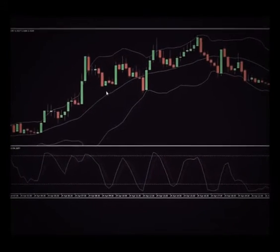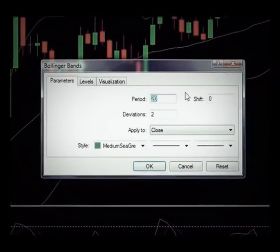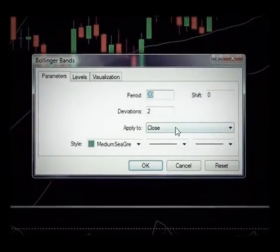And we have our Bollinger Bands as you can see here, which is the period is 20 and the deviation is 2, and then it's applied to close.